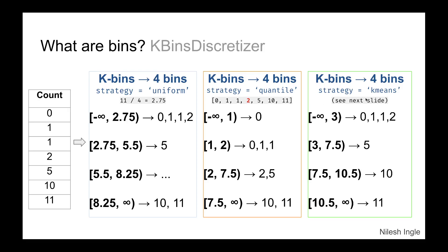The third strategy is 'k-means,' shown on the rightmost side. It uses the k-means clustering algorithm to calculate bins — nearest data points are grouped together. Before looking at the resulting bins, let's see how it is implemented.